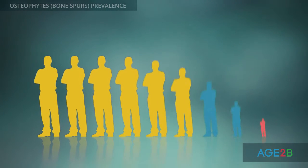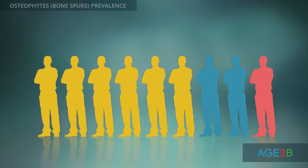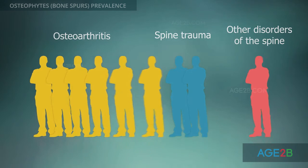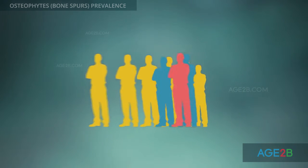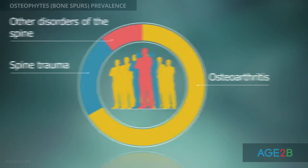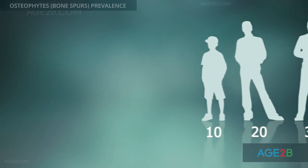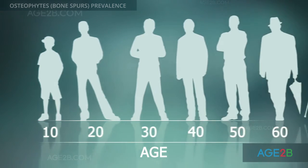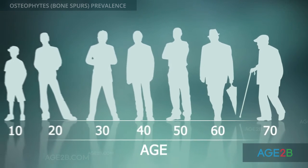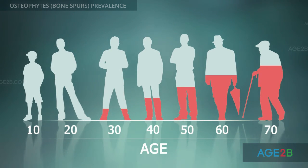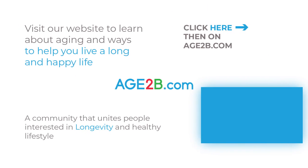Osteophytes in the spine are not independent diseases. They are the result of osteoarthritis, trauma, or other disorders of the spine. The incidence of osteophytes increases with age. In persons over age 60, osteophytes of the spine are very common.